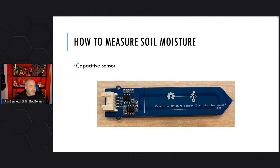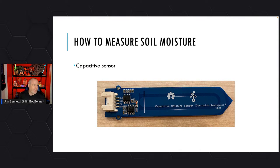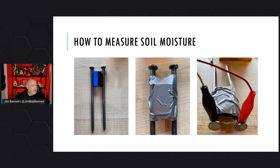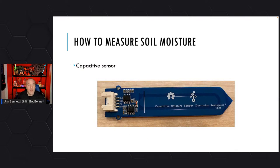The other option is a capacitive sensor. A capacitive sensor measures the ability to store charge between two plates. It uses moisture levels and nutrient levels in the soil to store an amount of charge, and that charge is converted to a voltage — the wetter the soil, the more charge gets stored, and the lower the voltage. The big advantage of capacitive sensors is they are corrosion resistant. If you have two bits of metal in wet soil they can rust; capacitive plates don't rust. So they are corrosion resistant and last a lot longer.